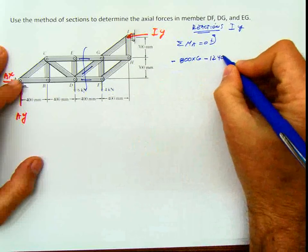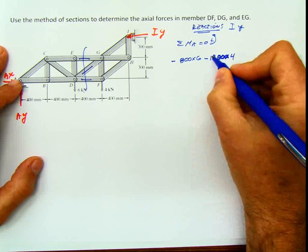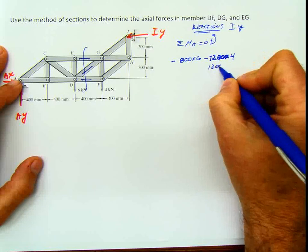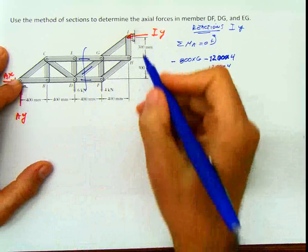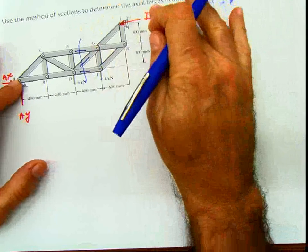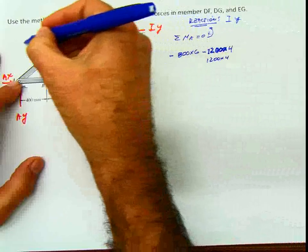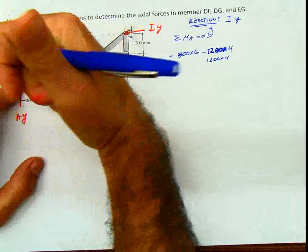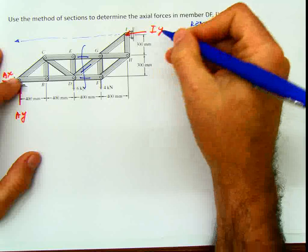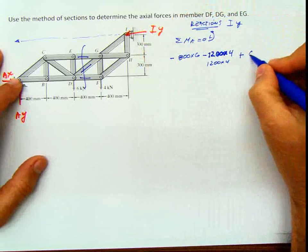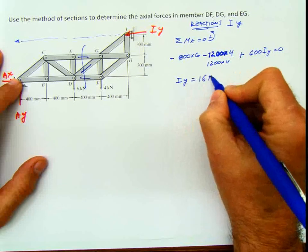1,200 times 4 is negative because of the direction of rotation. And then I have Ay, which is producing a rotation in this direction when I push it. Remember the principle of transmissibility — you can move it, and then you can see that the moment is going to be positive according to my convention. So this is going to be plus 600 Iy equals 0. And then you can solve for Iy, and Iy equals 16 kilonewton.